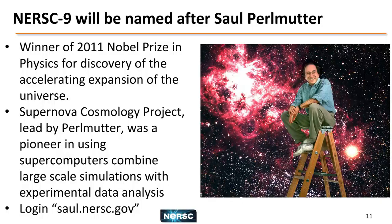Saul Perlmutter was the winner of the 2011 Nobel Prize in Physics. He discovered the accelerating expansion of the universe, and was a pioneer in combining large-scale simulations with experimental data analysis using supercomputers. He actually still works at Berkeley Lab. We had to ask his permission to name the machine after him, and he said yes — on the condition that users can SSH in at saul.nersc.gov, because 'Perlmutter' was too long.